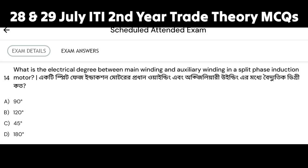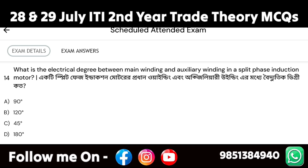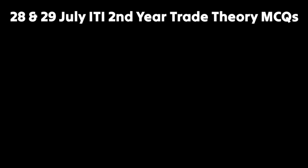What is the electrical degree between the main winding and auxiliary winding in a split-phase induction motor? This question is important for ITI electrician and ITI wireman trades. In a split-phase induction motor, the angle between main winding and auxiliary winding is 90 degrees. Option A, 90 degrees, is the correct answer.